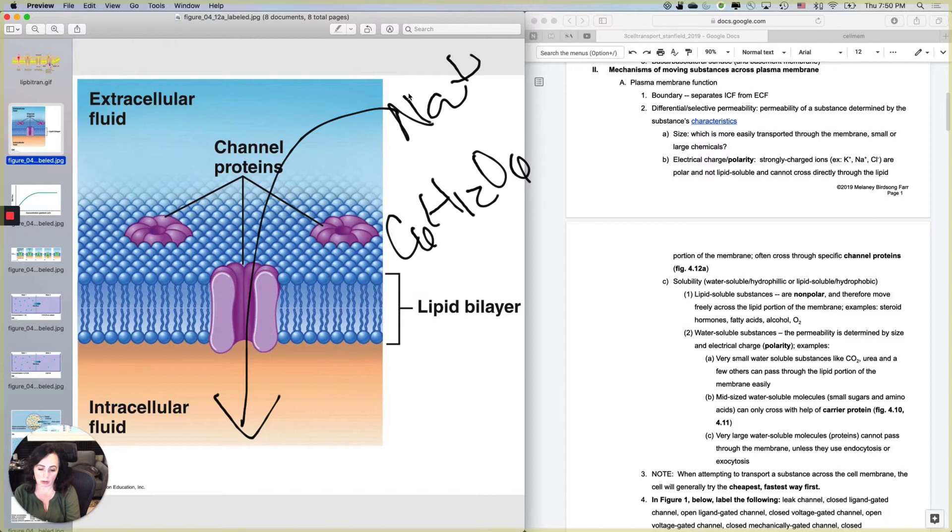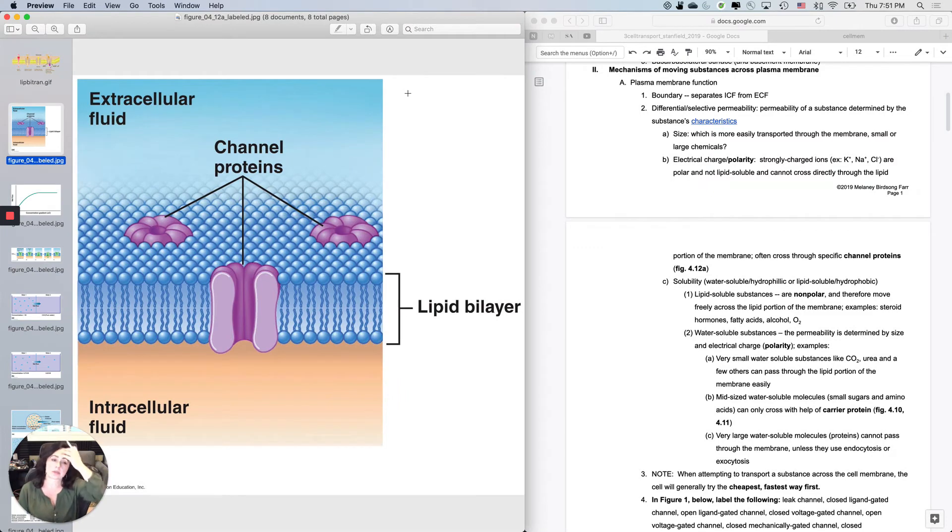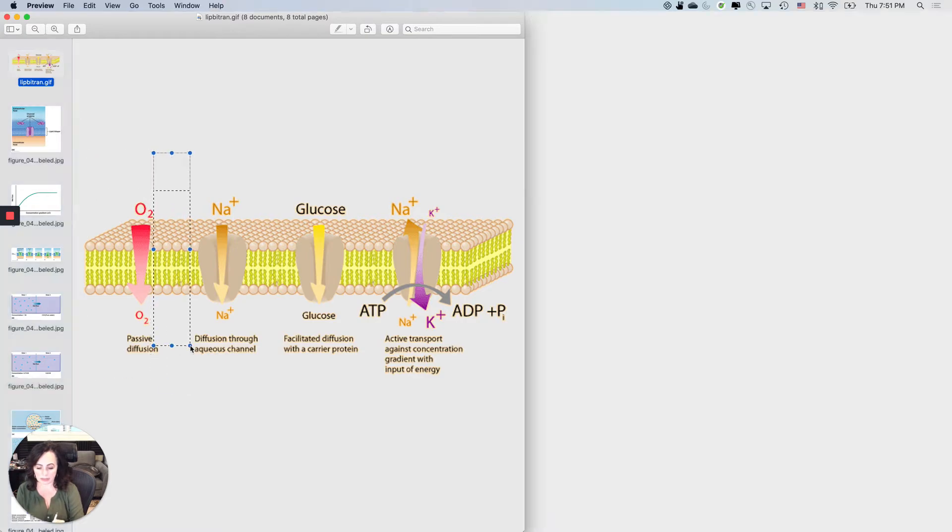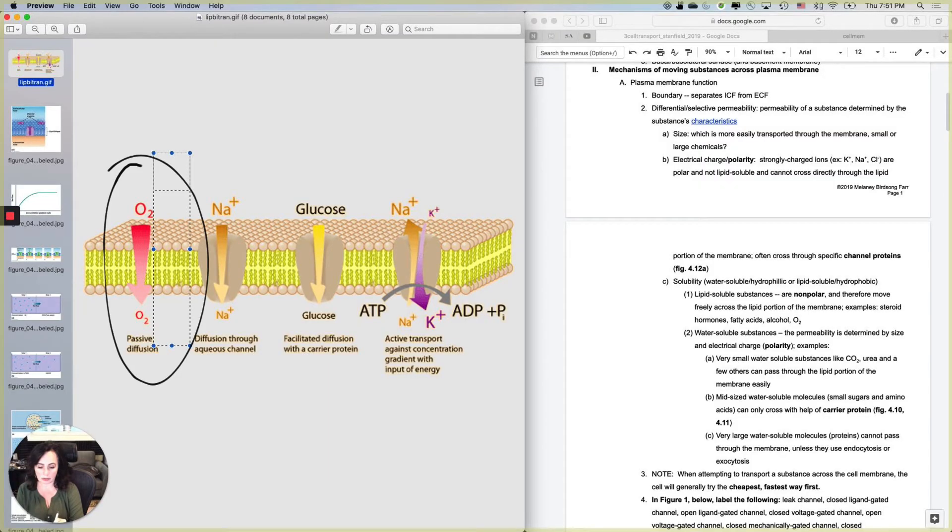The next thing you have to consider is solubility. Is the thing you're trying to move across water soluble or lipid soluble? Lipid soluble substances, all of them, tend to be nonpolar and therefore they can move across the cell membrane really easily because they are lipid soluble. A great example is oxygen, which is lipid soluble and moves in and out down its concentration gradient.